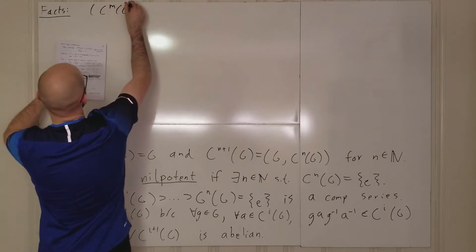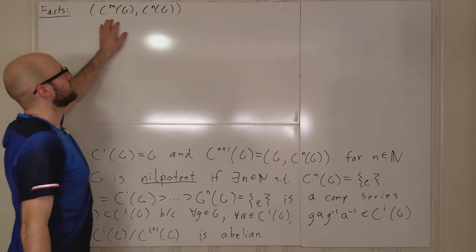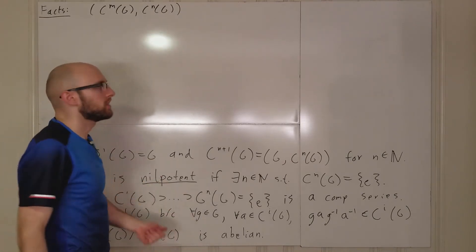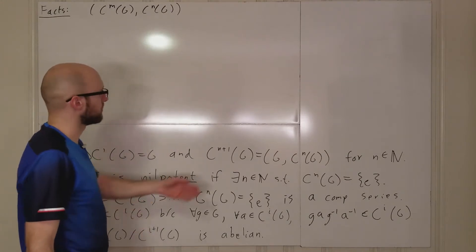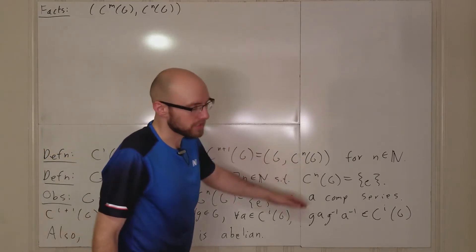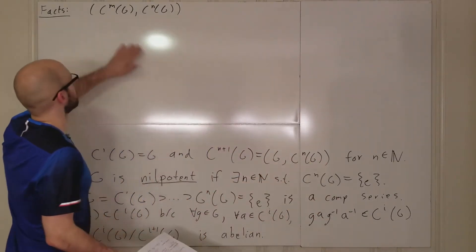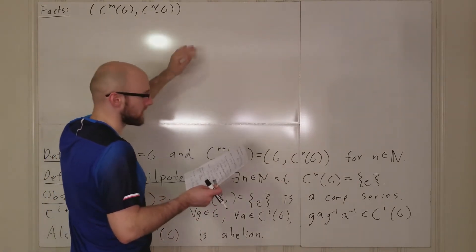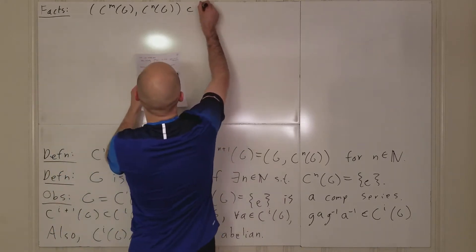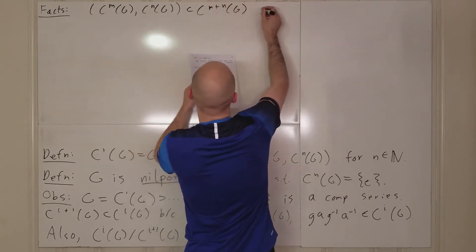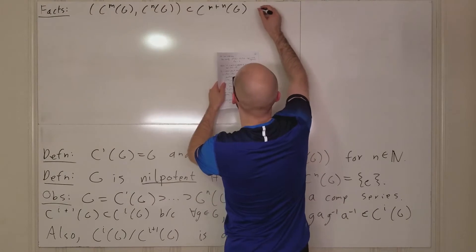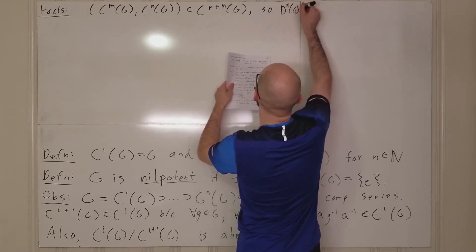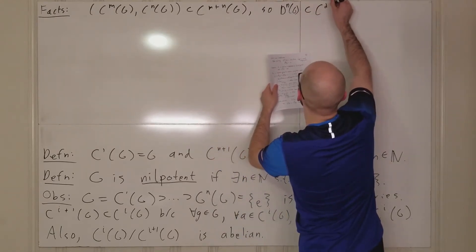The commutator of C^m(G) and C^n(G) — I'm going to call it the commutator of these two subgroups because if you refer to the commutator of G you typically mean [G, G], which fits this notation. You can prove that [C^m(G), C^n(G)] is contained in C^{m+n}(G), and from there you can conclude that D^n(G) is contained in C^{2^n}(G).